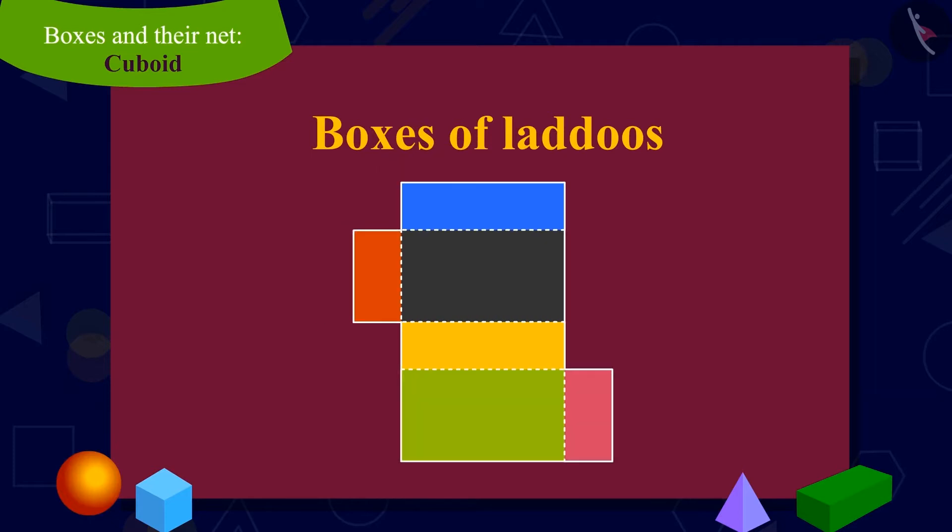Appu showed Chanda a cardboard cutout. He asked Chanda to fold the cutout on the line with dots on it. Chanda began to fold the cutout in this manner.